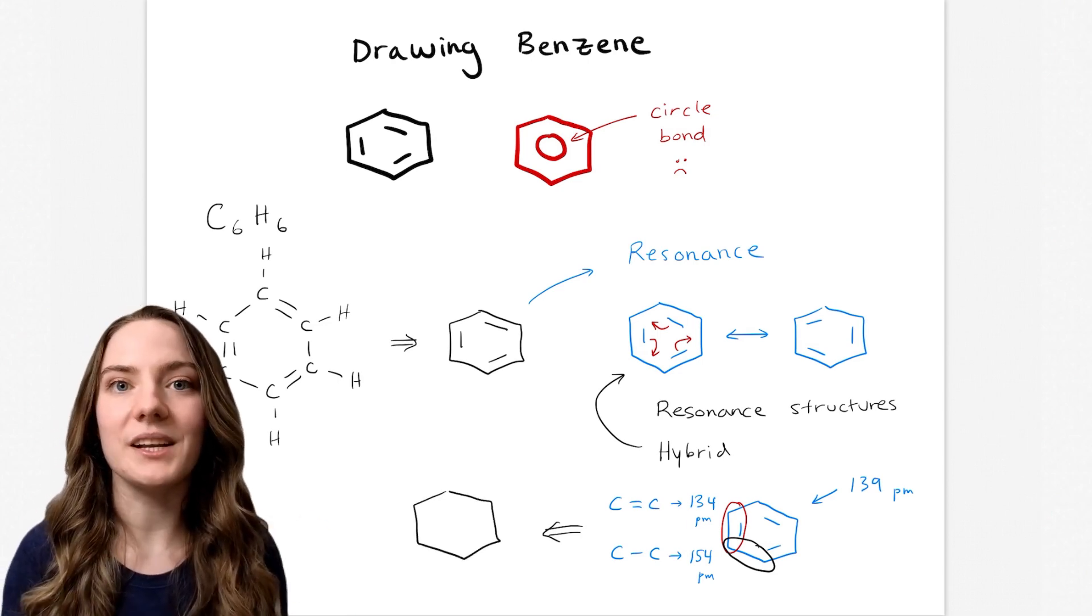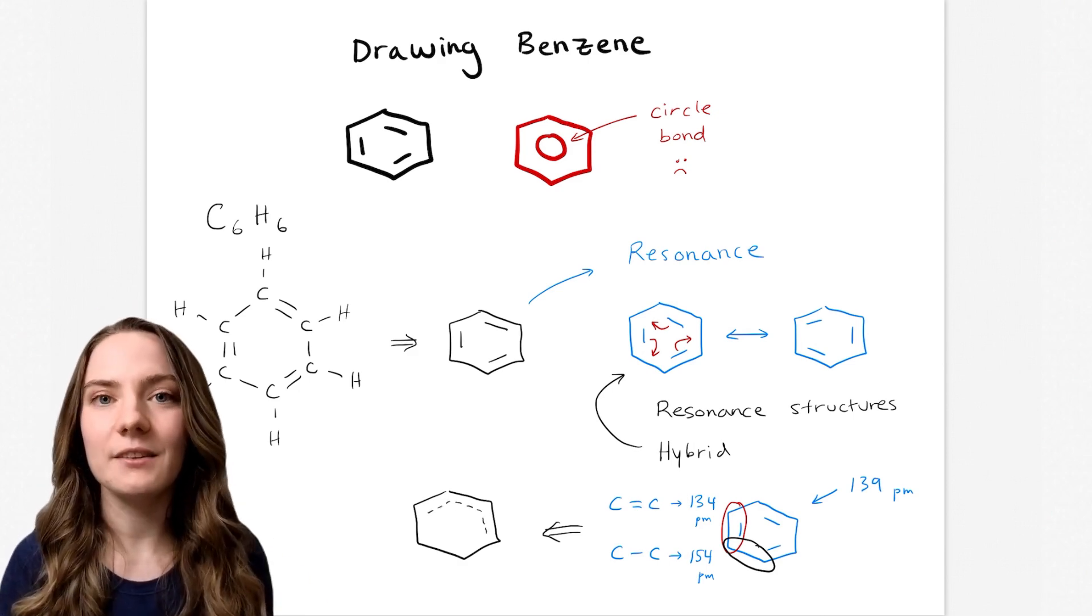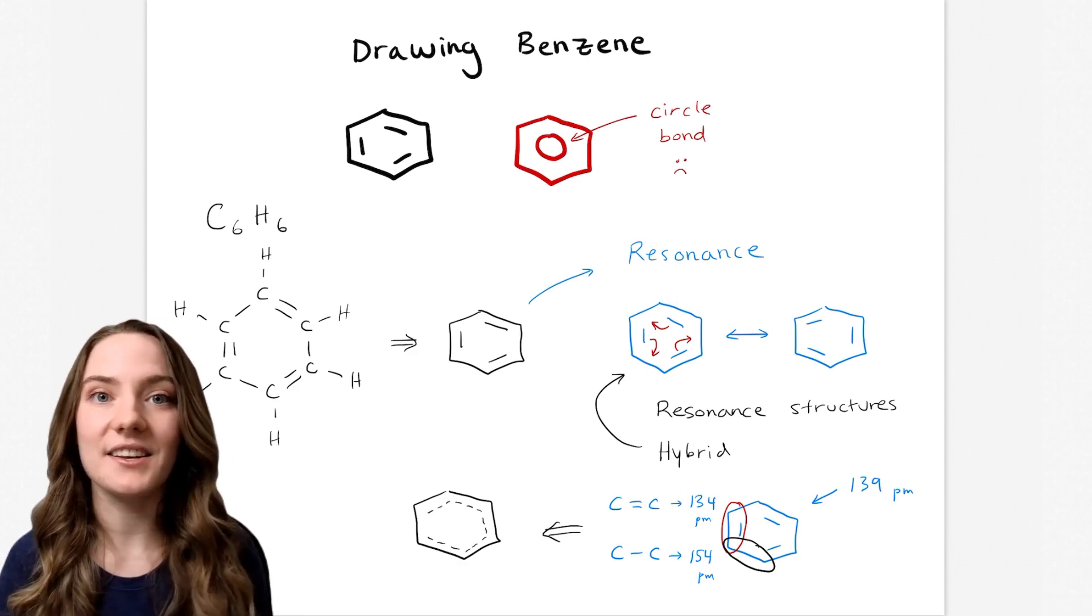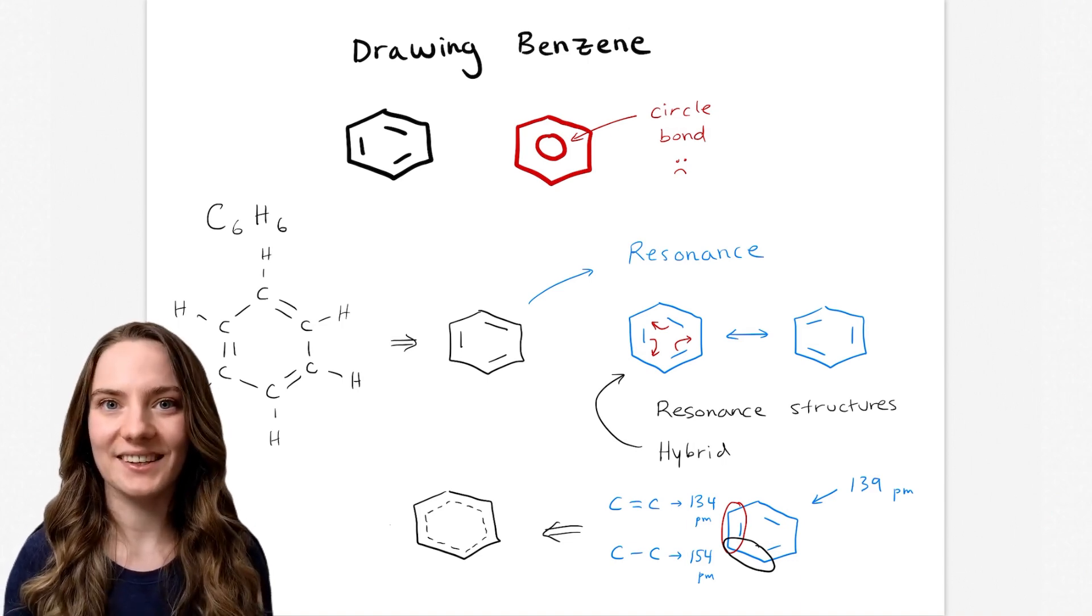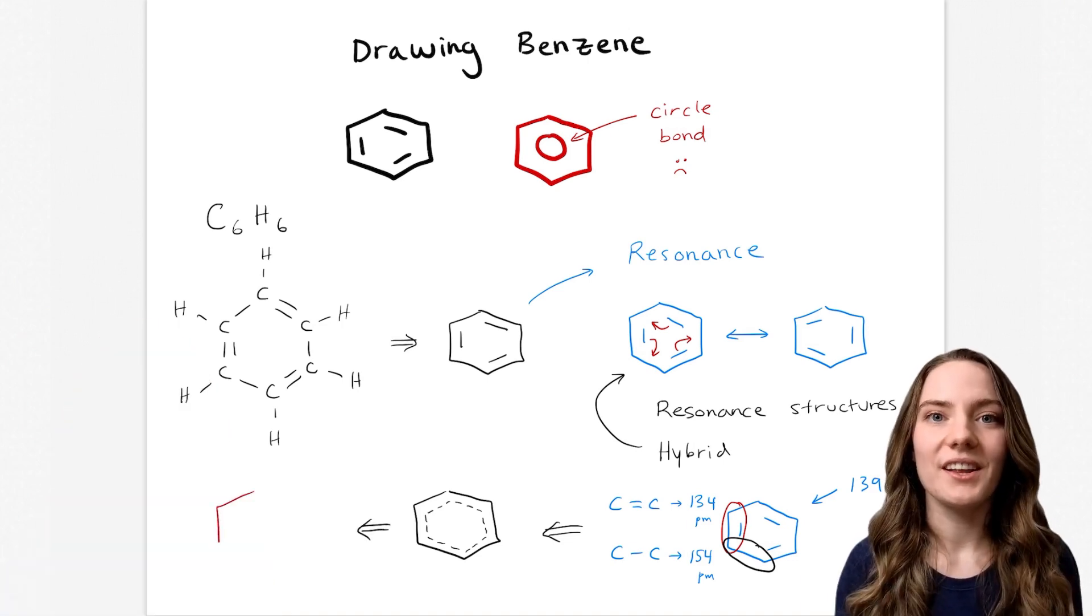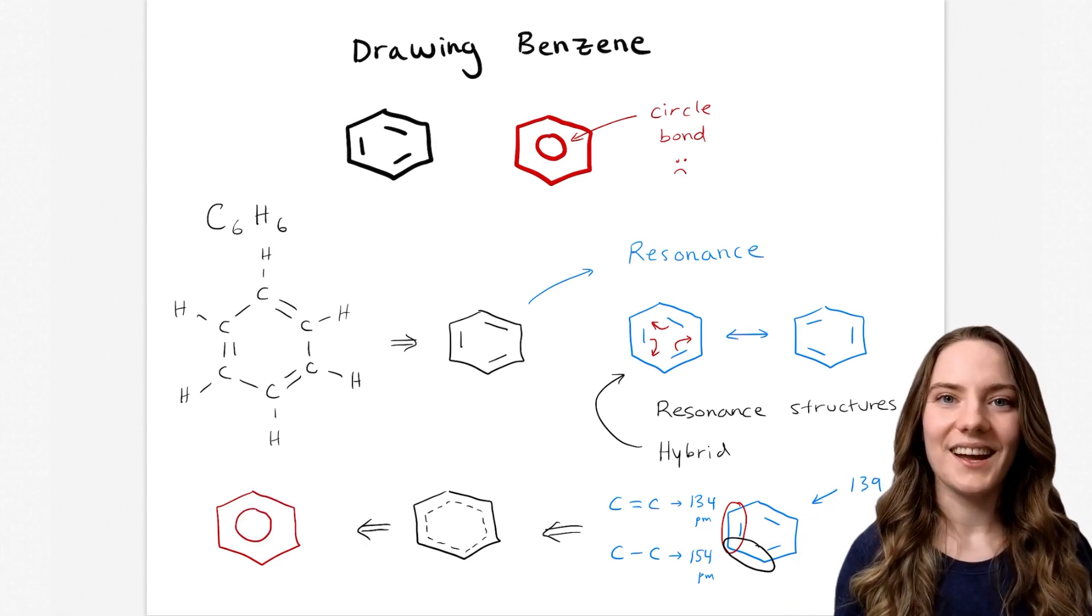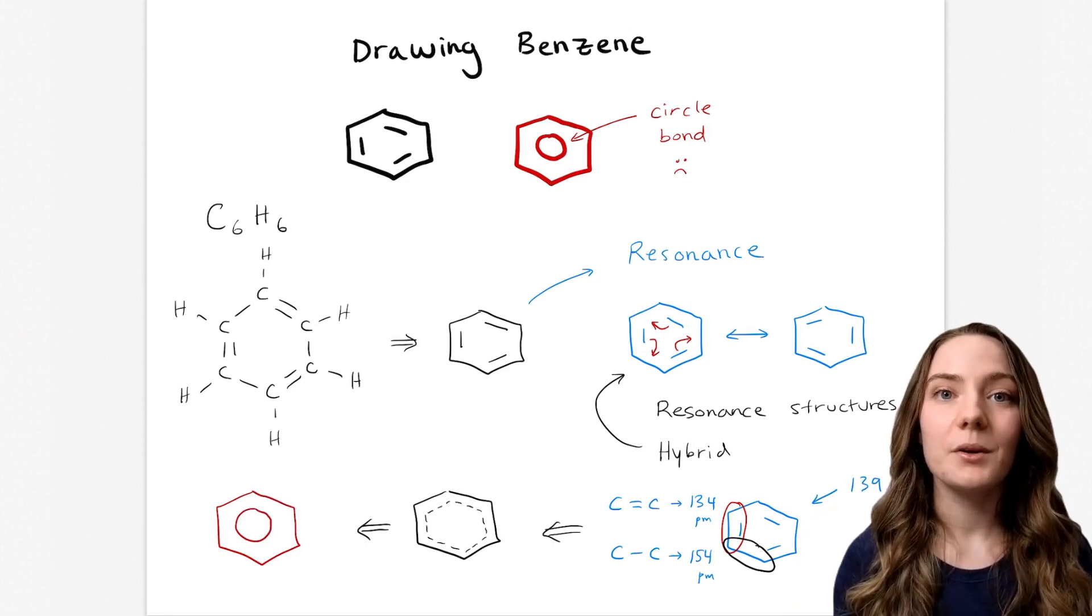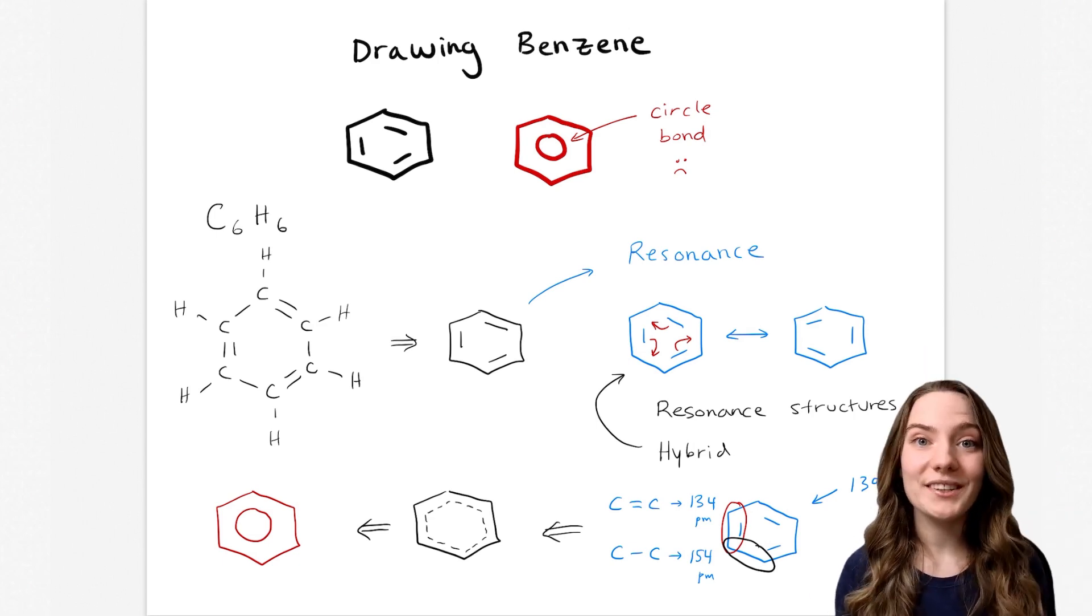A mix between double and single. And I can represent that these bonds have both single and double bond properties using a dotted line like this. And it's from this structure that we can see why we would draw benzene with a circle. The circle represents the resonance between both of benzene's resonance structures.